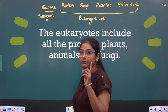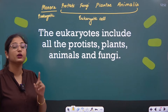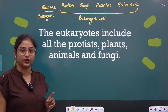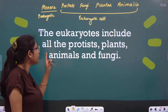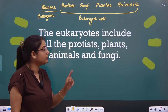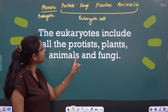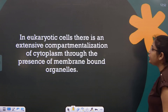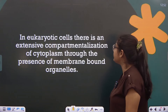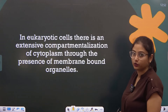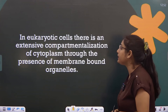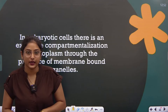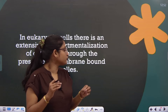I am using the word 'mostly' repeatedly because there are many examples that form exceptions in every specific kingdom. The eukaryotes include all the protists, plants, animals and fungi. In eukaryotic cells, there is an extensive compartmentalization of cytoplasm through the presence of membrane-bound organelles.